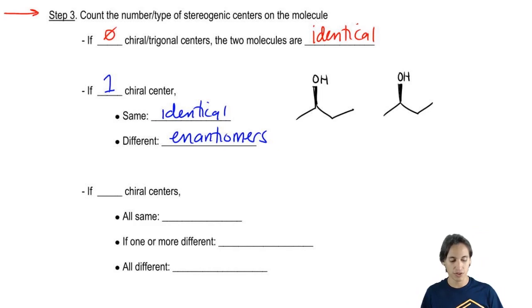So then I go ahead and I figure out the configuration of this and I figure out that this one is R, has one chiral center, and this one is also R. So what do you think that relationship is? Well, that's going to be identical because they're the same molecule and they have the same chiral center.